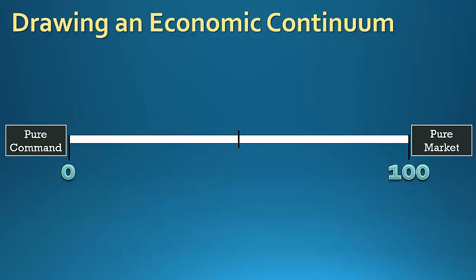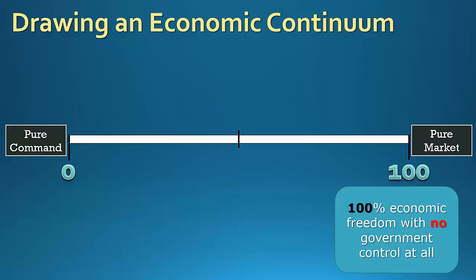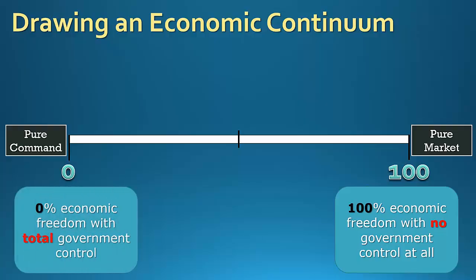Putting these numbers here actually serves two purposes. First, it makes it easier to describe the location of any given point on the line as a percentage — the middle would be 50%, halfway between the middle and the pure market end would be 75%, and so forth. The other reason is that it reminds us that anything all the way on the pure market end represents 100% economic freedom with no government control at all, and anything all the way on the pure command end represents 0% economic freedom with total government control.